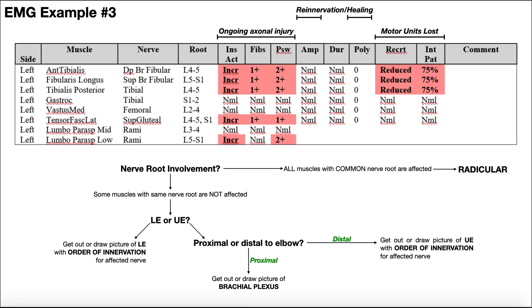As we go throughout the question figuring out where the injury is, we're going to use this flowchart down here at the bottom to kind of guide our thinking. And the first question that we should ask ourselves is: do we think there's nerve root involvement?